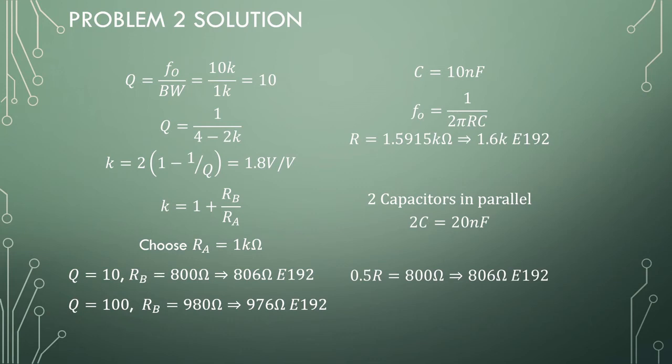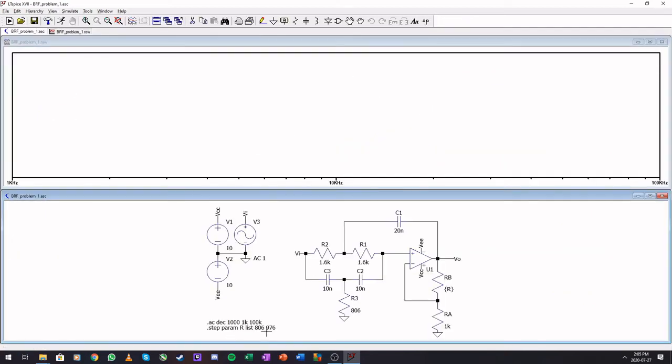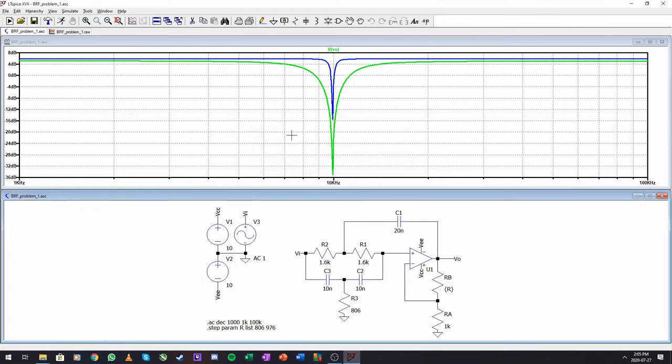Let me open up the simulation here. Here is our band reject filter. Let's run our simulation. The Q factor for 10, Q factor for 100. Let's get rid of the phase. We can see that this rejects almost at 10 kHz. Due to the selection of resistors, this has now shifted to the left. As I said earlier, these are very sensitive to component choices. If you're struggling to match the frequency exactly, probably go for a slightly larger bandwidth, so that the frequency you're trying to reject falls within this gap.